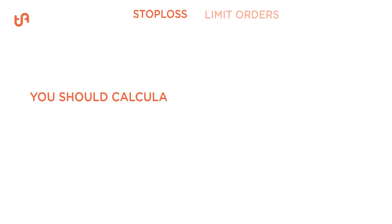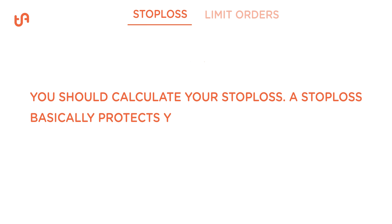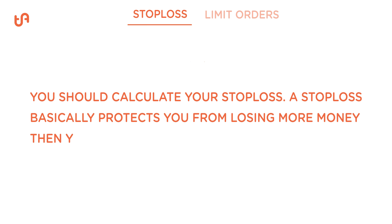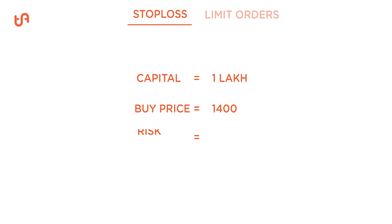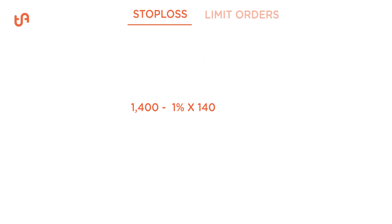Number one, you should calculate your stop loss. A stop loss basically protects you from losing more money than you're willing to lose. Yes, you can control risk. Suppose you have 1 lakh in capital, and you want to buy Reliance Industries at 1,400. The maximum you're willing to lose on your trade is 1%, so that's 1,000 rupees of your capital. Simply subtract the buy price, 1,400, by 1%, and we have a stop loss of 1,386. The maximum you will lose is only 1% of your capital.